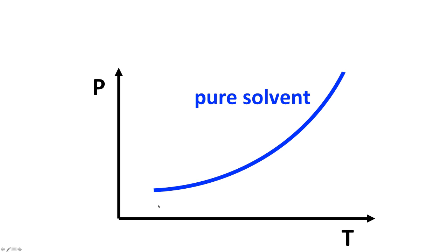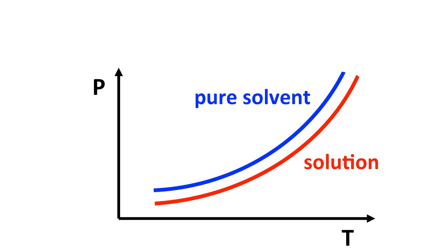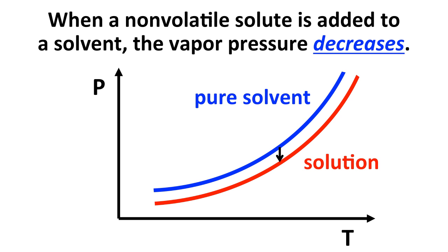The vapor pressure curve for a pure solvent looks something like this curved line increasing as temperature increases — the vapor pressure increases. It's not linear; it's kind of an exponential increase. At any given temperature, there's a specific vapor pressure for that particular liquid or solvent. If we have a solution with that solvent, at every temperature the vapor pressure of the solution will be lower than the vapor pressure of the pure solvent. So when you add a non-volatile solute to a solvent, the vapor pressure decreases.